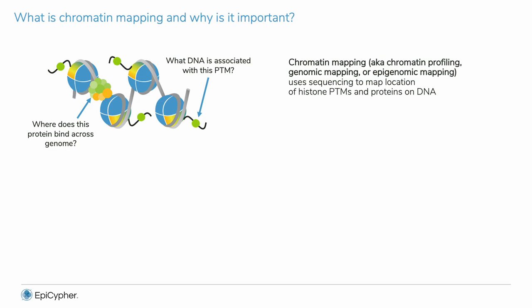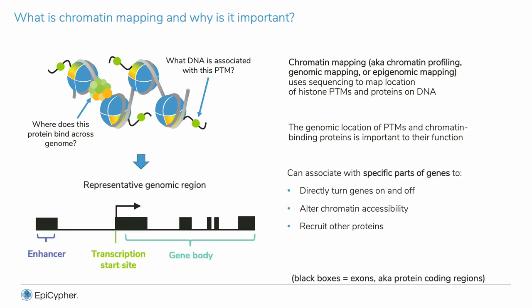So, why is this important? Chromatin-associated proteins and histone PTMs are not randomly located in the genome. This schematic shows genomic features that are specifically targeted by different PTMs and proteins. The location is related to the downstream impact on chromatin structure and gene expression.